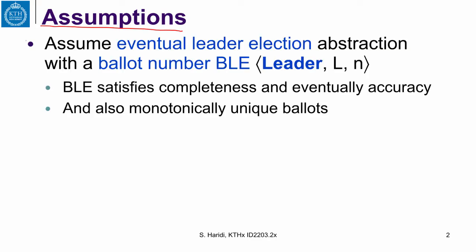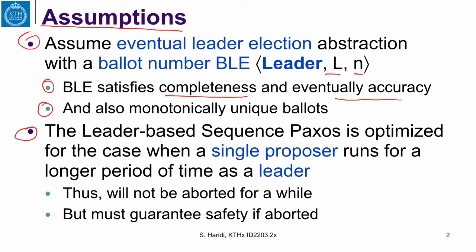Let us remember our assumptions. We assume an eventual leader election abstraction with ballot number, which is a ballot-based leader election, so we have a leader as an indication event. As we know, the ballot leader election satisfies completeness and eventual accuracy, and also monotonically increasing unique ballots. The leader-based Paxos is optimized for the case where we have a single proposer that runs for a longer period of time, and it always guarantees safety.